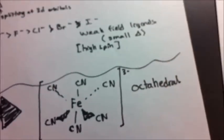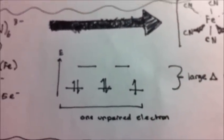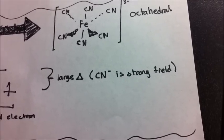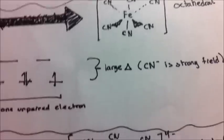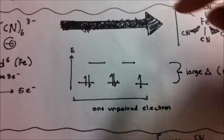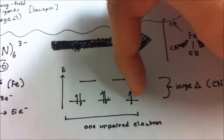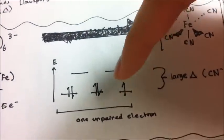Here is our octahedral model. When we fill it in, we look at our spectrochemical series and see that cyanide is a strong field ligand, so it's going to have a large delta value. With a large delta value, we can't access the higher levels until we fill the lower ones first. So filling in 5 electrons: 1, 2, 3, 4, 5 — we only have one unpaired electron.